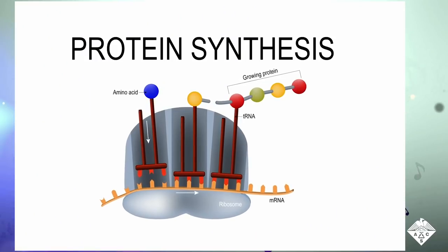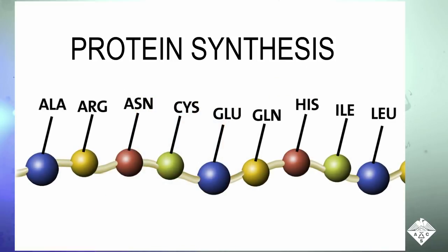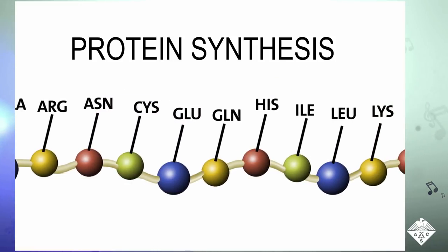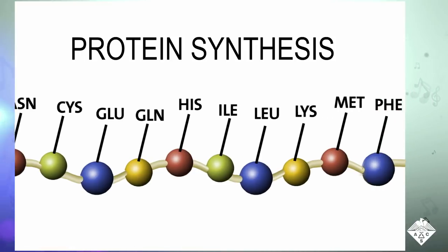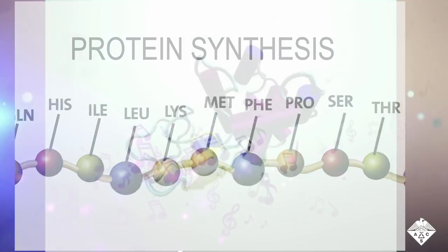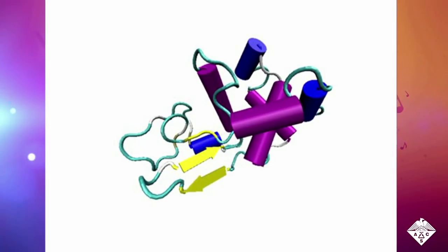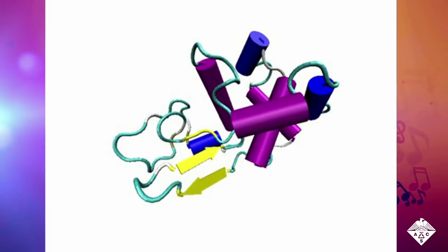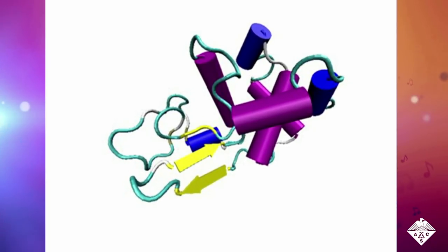To make proteins, cellular structures called ribosomes add one of 20 different amino acids to a growing chain, in combinations specified by DNA. The properties of the amino acids and the complex shapes into which the resulting proteins fold determine how the molecule will work in the body.